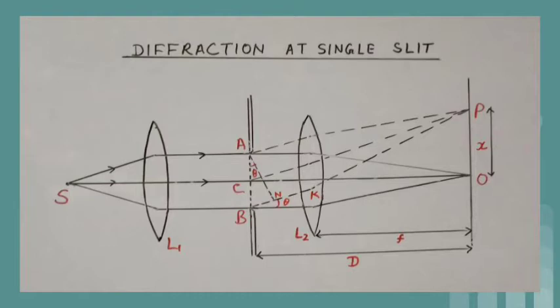This pattern consists of a central bright fringe and alternate dark and bright fringes of decreasing intensity on either side of the central bright fringe. This central bright fringe is also called the principal maximum.